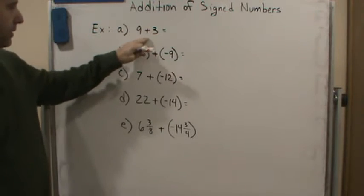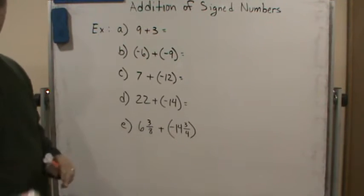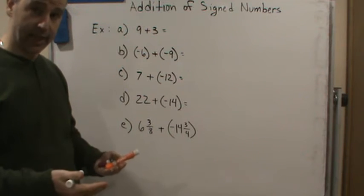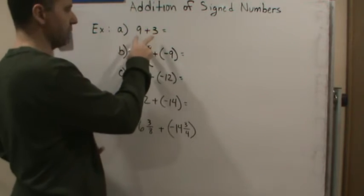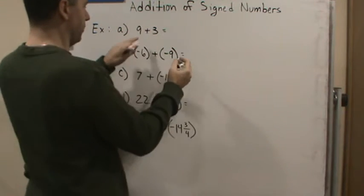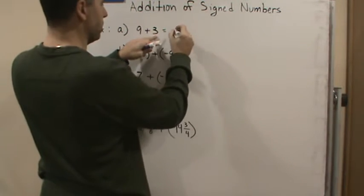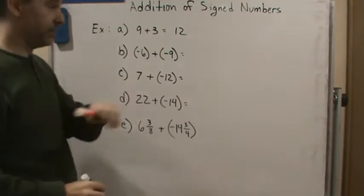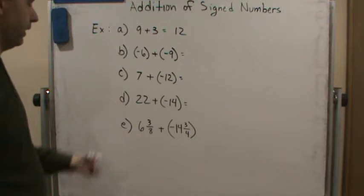Now part A — notice that they have the same sign. So all I do is add the values and keep the sign. They're both positive, so I'm going to add these values and keep the sign. So it's going to be 9 plus 3, which is 12. And since they're positive, the answer is positive.